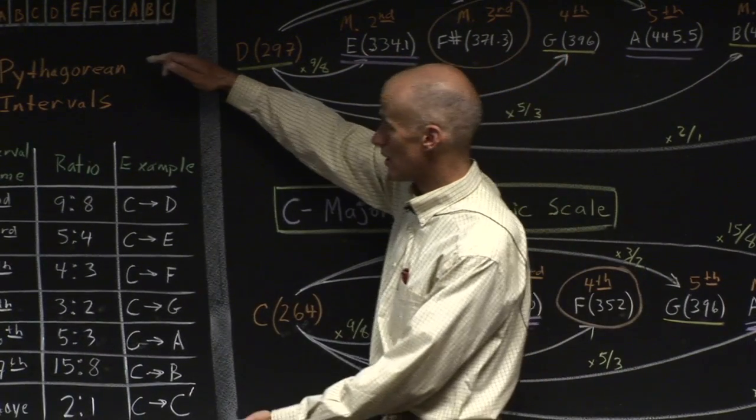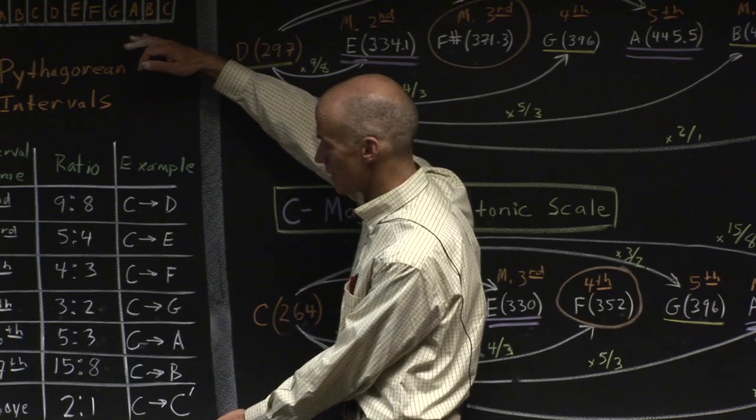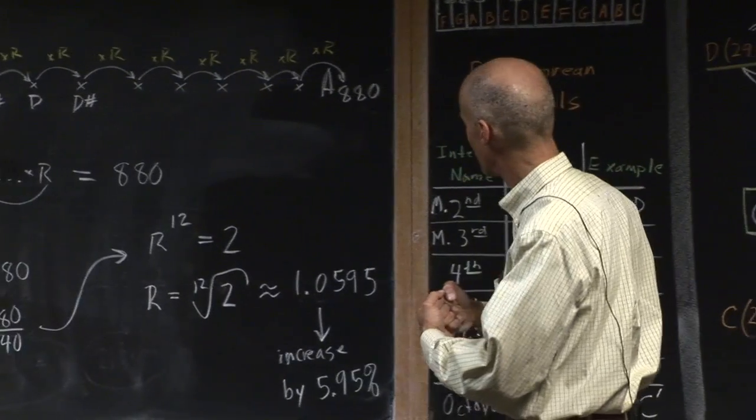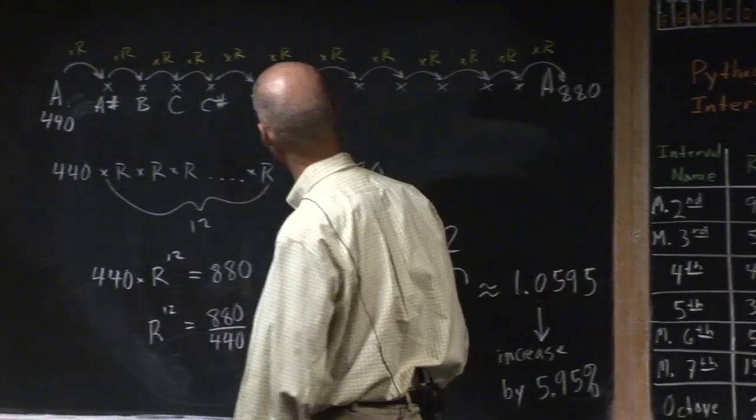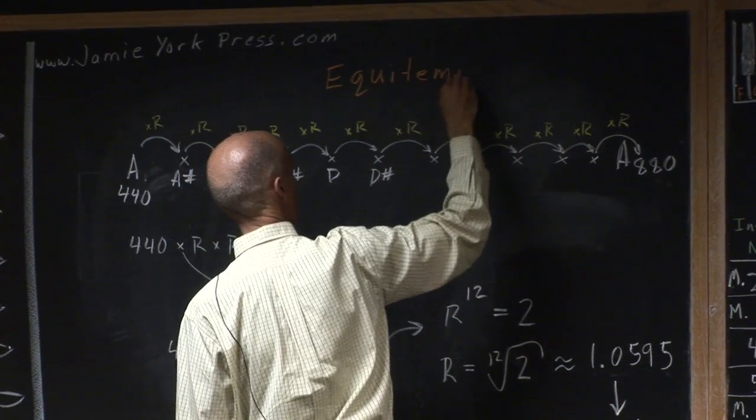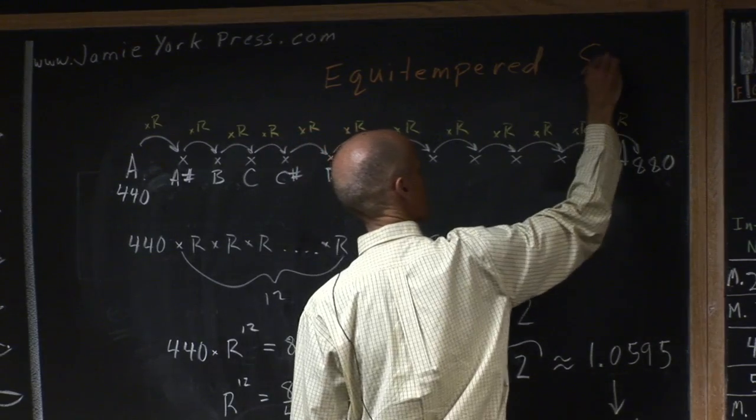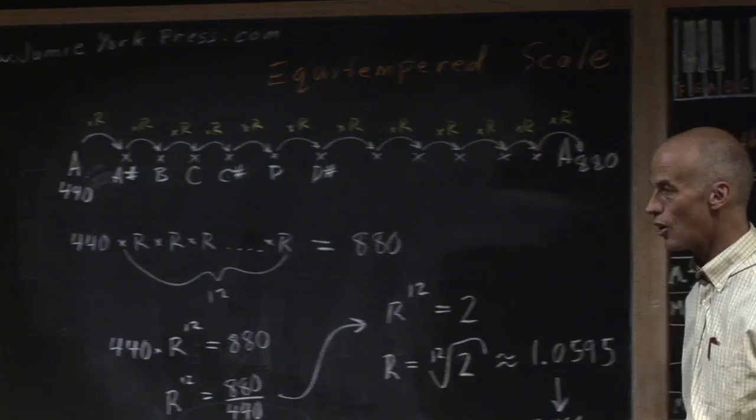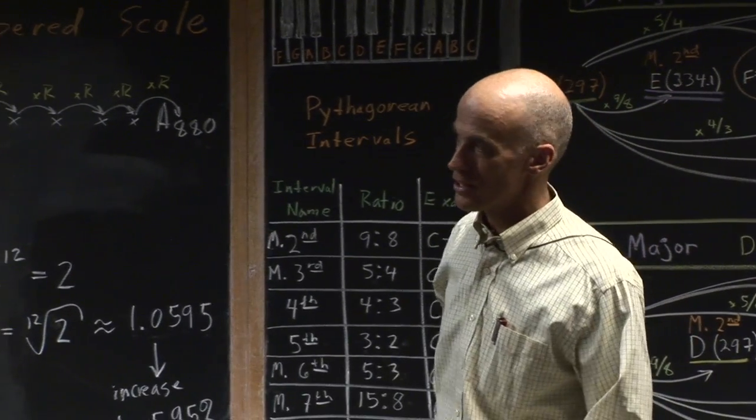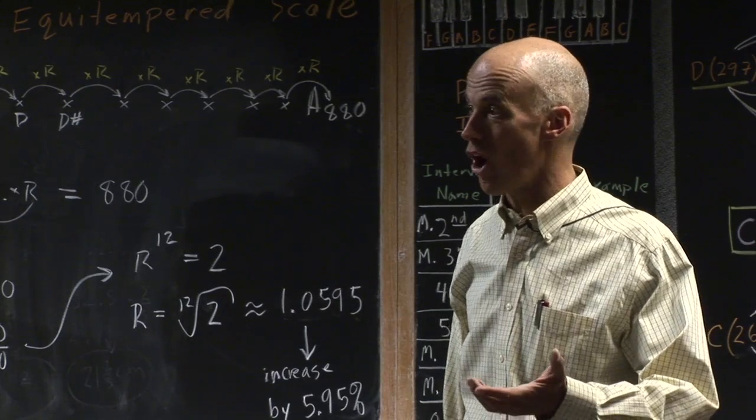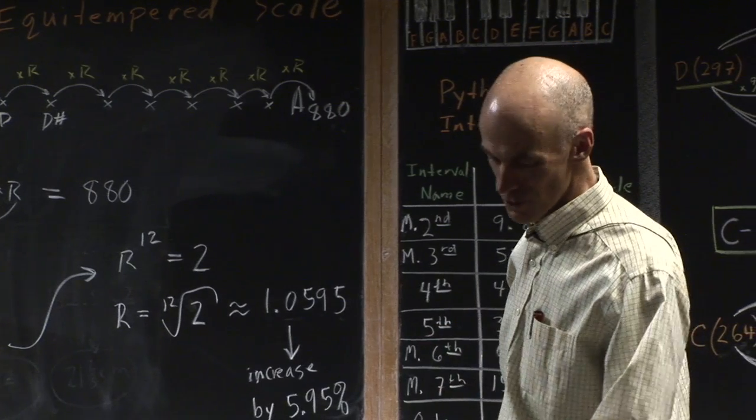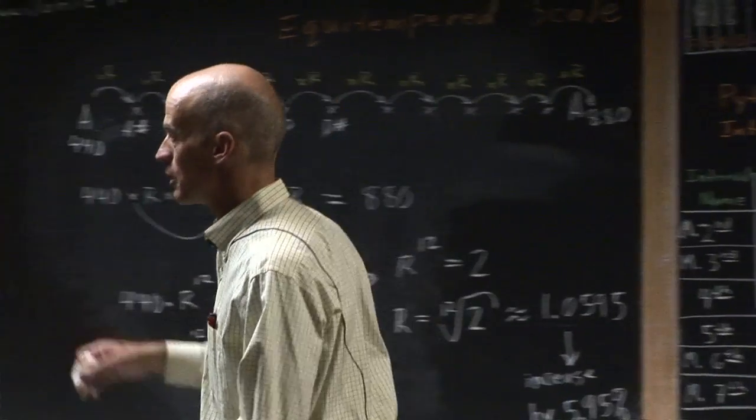So notice what's happened here. We have this principle that Pythagoras discovered, as he said, that was given to us by God, and this is what defines these perfect intervals. And now what have we created? We've been created instead another scale, and this scale that we've just invented is the equitempered scale. And all of these notes I can calculate, and guess what we end up with? We end up with notes that are actually, guess what? Often a little bit off, a little bit off.